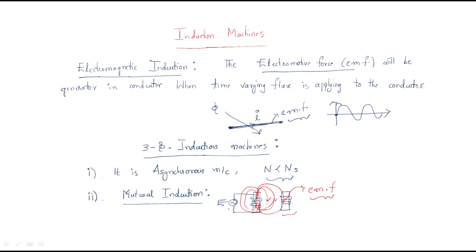Simply, there is no direct electrical connection between the two coils. The electrical power given to the primary coil is also generated in the secondary coil through flux linkage. Electrical power is transferred from primary to secondary by using the mutual induction concept. These are the two important characteristics of the induction machine.